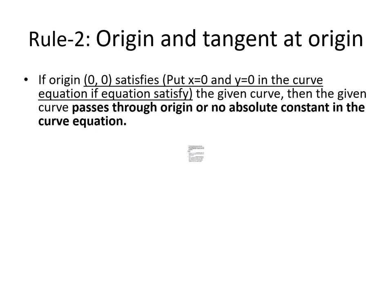Now rule two: identify whether your curve passes through the origin. If the origin (0, 0) satisfies your curve equation, the curve passes through the origin — that is the simplest way to identify it. A second way: check whether your equation contains an absolute constant or not. If your equation contains an absolute constant — a term that is purely constant, not multiplied or divided by any variable — then your curve is not passing through the origin.